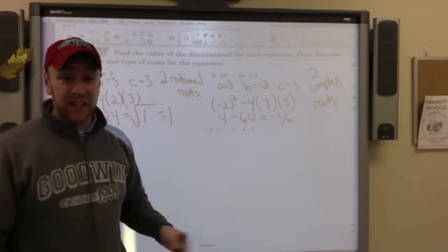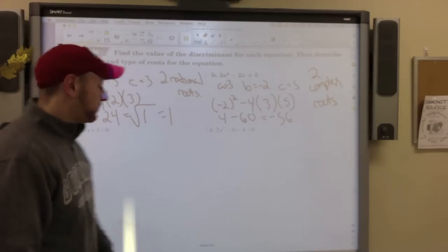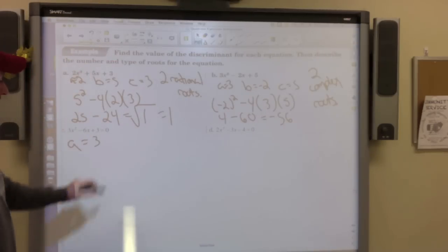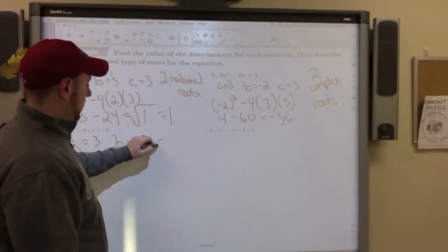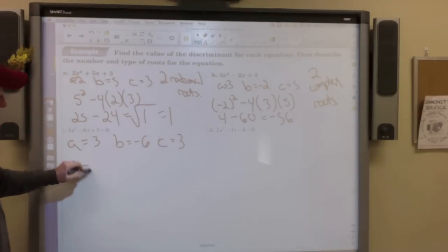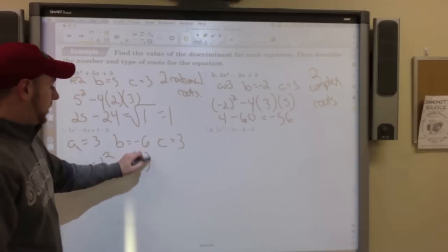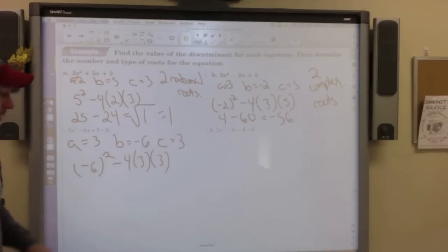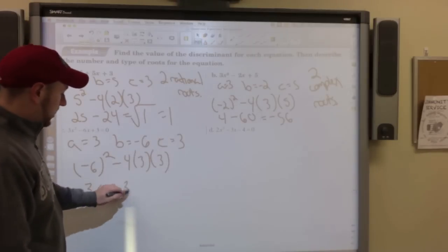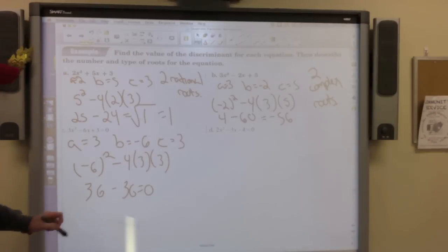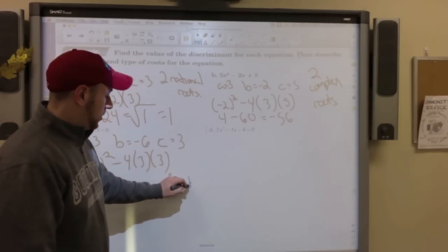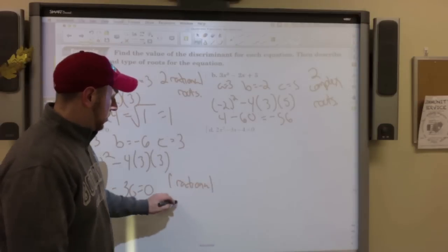a is 3, b is negative 6, c is 3. Negative 6 squared minus 4 times 3 times 3. 36 minus 36 equals 0. That means the square root goes away. So there's going to be one rational root.